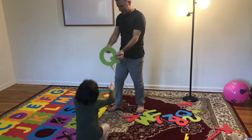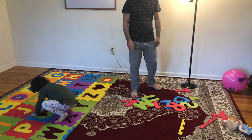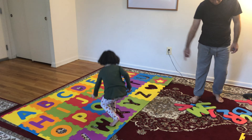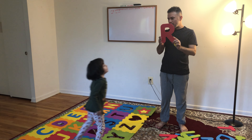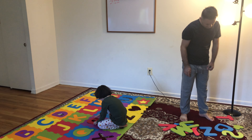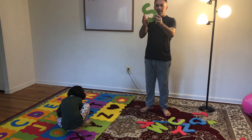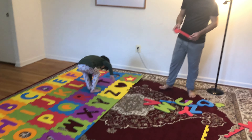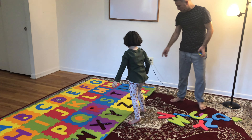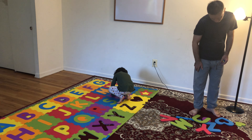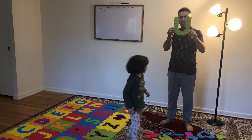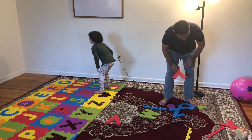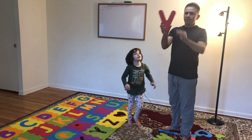The next one is Q. This one is the middle of the Q. Q. The next one is R — R is like rabbit. Rabbit. Good job. Good job. The next one is S, it's like sun. The next one is T, it's like Tom. The next one is V, it's like Victor. V is like Victor.